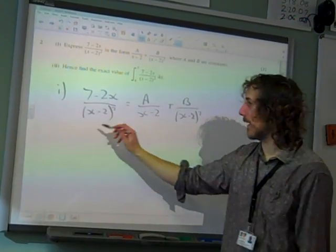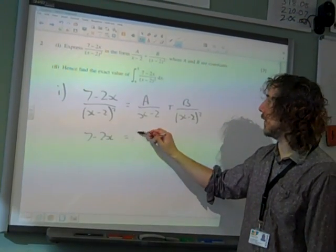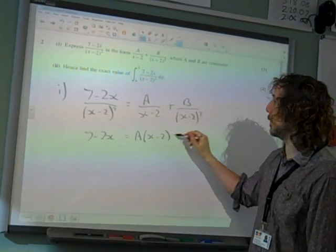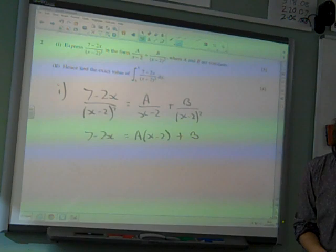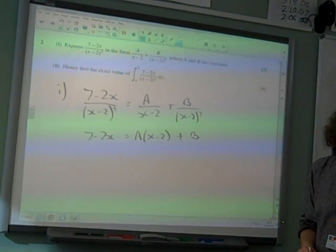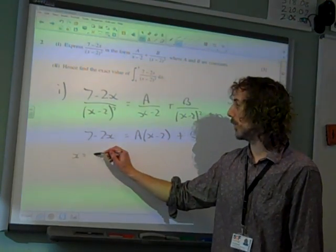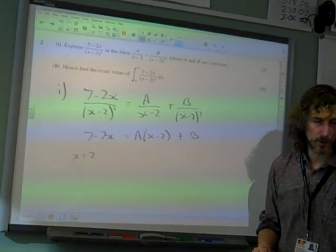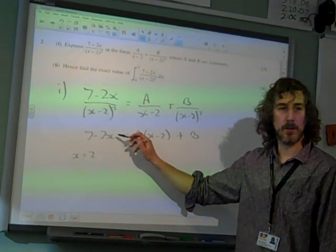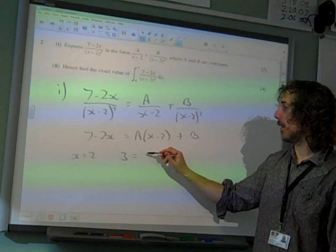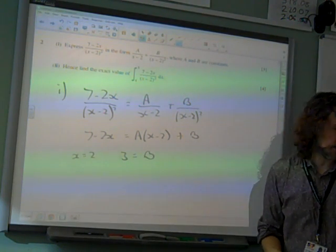So we'll do our standard next step, which is to multiply by the denominator, which would give us A times x minus 2 plus B, if we multiply by x minus 2 squared. Now we're going to sub in some values that will work for us. So let's try subbing in x equals 2. That's the obvious one to go with to start with. And that gives us 7 minus 4, which is 3, is A times 0 plus B. So B is 3.